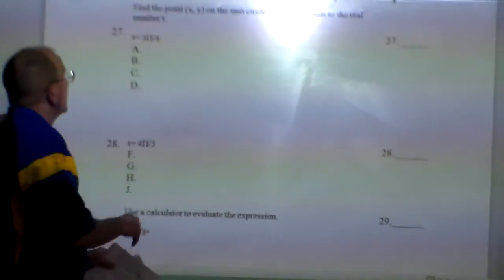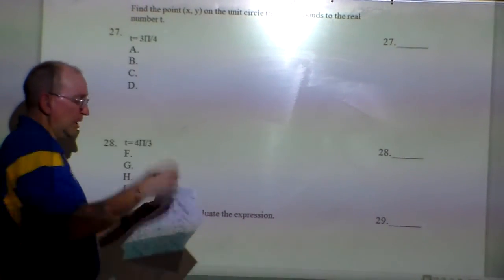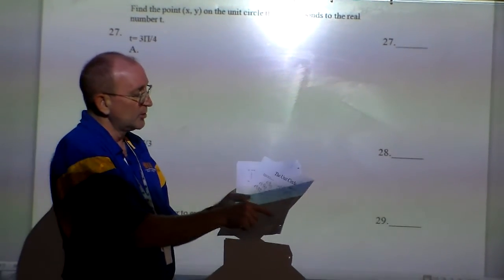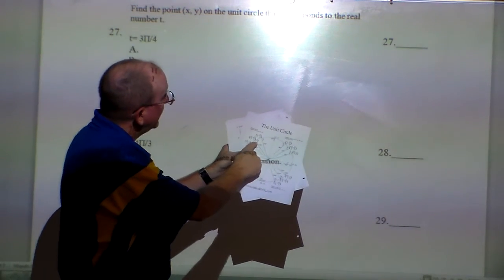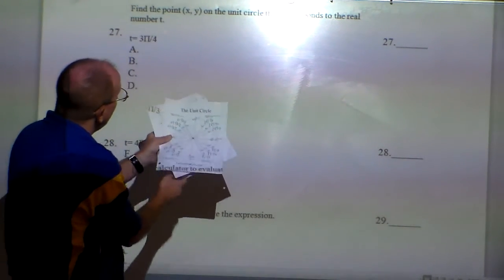All we're going to do is this. What is the point on the circle at 3 pi over 4? I'm going to look over here, find my unit circle, go to 3 pi over 4, and I see that the point is right there.